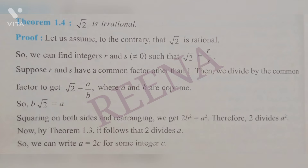Since 2b² = a², we have b² = a²/2, so 2 divides a². From Theorem 1.3, if 2 divides a², then 2 must also divide a. The new line is: a = 2c for some integer c. To explain — since 2 divides a, a can be written as 2 times some integer c, just as 6 = 2 × 3.